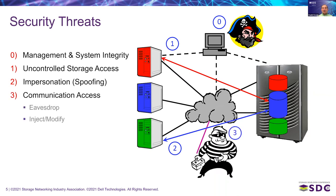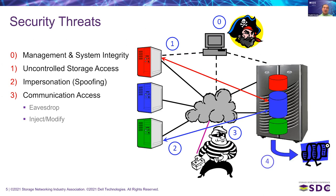We can also see an interesting character that gets communication access to the SAN itself, to the network itself. This means that this character is able to analyze all the traffic, eavesdrop the traffic that is going on, and possibly also modify this traffic or inject traffic that was not intended to be there. This is another fundamental security threat.